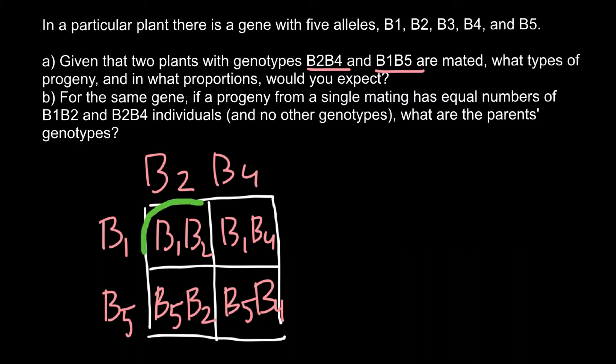As you see, we have the following genotypes. We have B1B2, repeated only once here. We have another genotype B1B4, also seen only once. We have B5B2, and we also have the last genotype, which is B5B4.